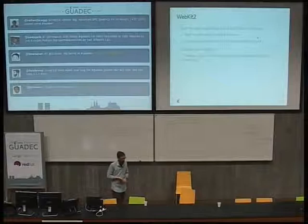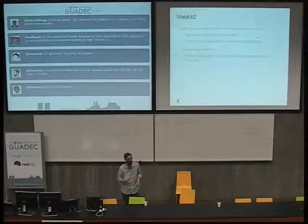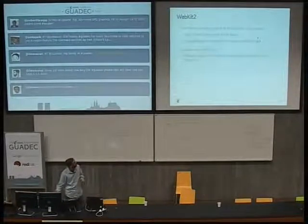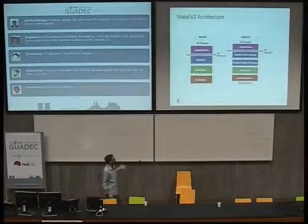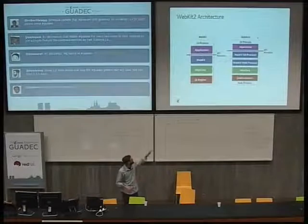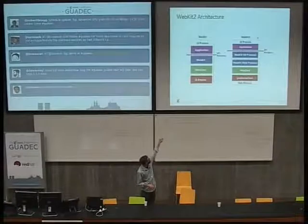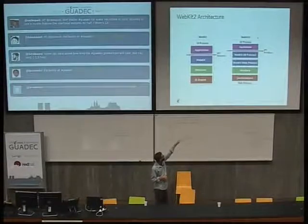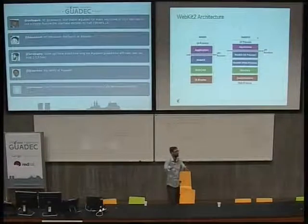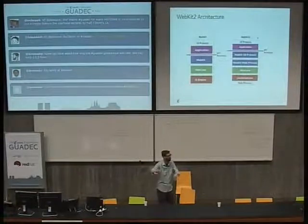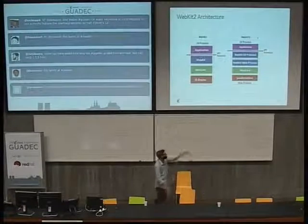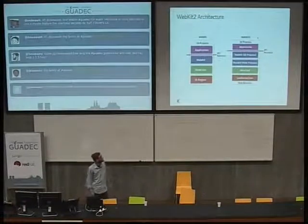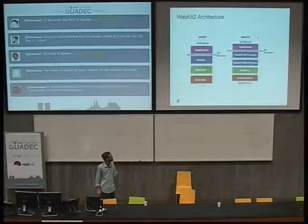We can sandbox the web rendering, because once you separate out the web part, it doesn't need to write to the hard disk or even read from it. In the architecture diagram, on the left you can see the old architecture where the API boundary was between the application and WebKit. Now we have two processes — the API is in the UI process, but underneath that API it's talking via IPC, via interprocess communication, to another process which has the rest of the library. So even if the web process crashes, it's not going to crash the browser, or read arbitrary information from the address space of the UI process.